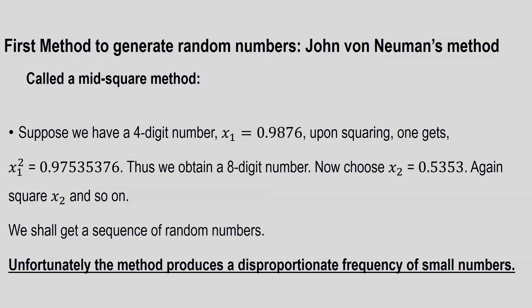The first method to generate random numbers was by John von Neumann, and this is called the mid-square method. How it is done: suppose we have a four-digit number, say x₁ = 0.9876. Upon squaring, one gets x₁² = 97535376. From a four-digit number we arrive at an eight-digit number, and now we take the middle four digits, that is 5353, and then square x₂ and so on. We get a sequence of random numbers. Unfortunately, this method produces a disproportionate frequency of smaller numbers.